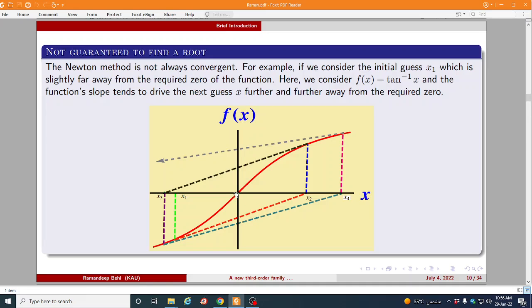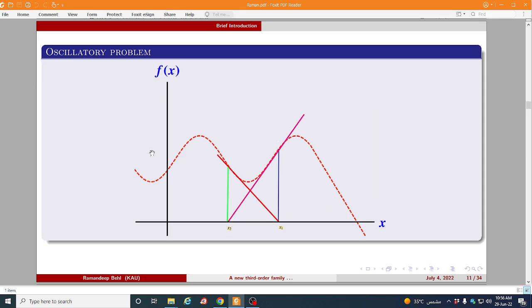Let us say you choose f(x) is equal to tan(x), this is the red line is the graph of the function. So we are looking for this route, so we choose initial approximation x1 which is quite close to the required route. As you can see that we reach here x2 then x3 and so on. So instead of coming close to the required route we are moving ahead of the required route.